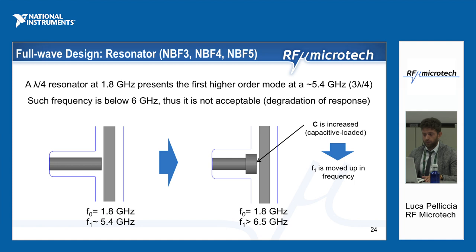For notch band filter 3 at 1.8 GHz, the lambda-over-4 resonator presents its first higher order mode at a frequency lower than 6 GHz, which is not acceptable. So we modified the shape of the resonator by increasing the capacitance to push the first higher order mode up in frequency. In this way, we were able to move the first higher order mode above 6.5 GHz — a region of the spectrum that does not affect the performance of the final device.